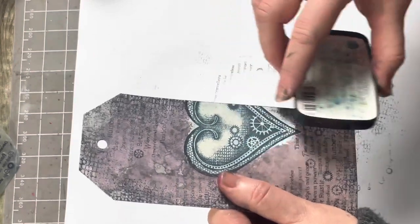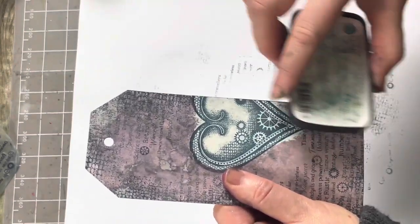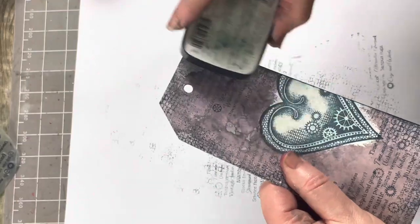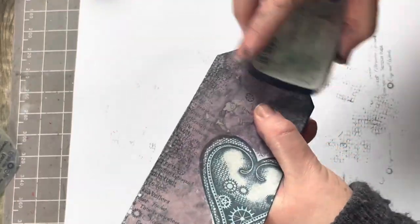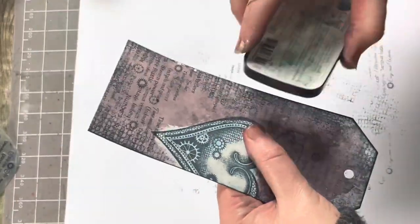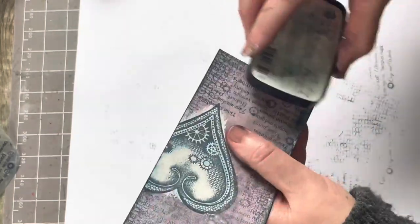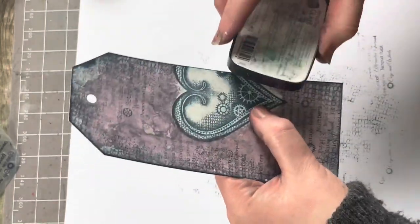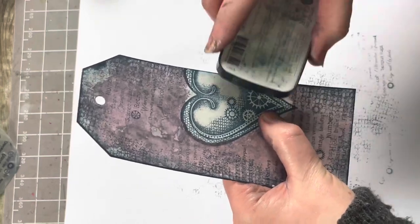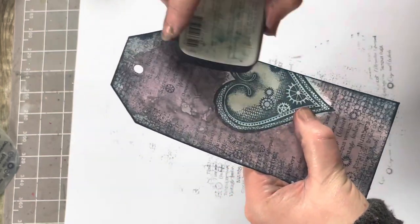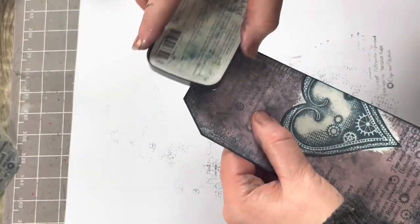To finish it off I'm going to go around the edge. You can use your ink pad like this or you could use your stencil brush, just to get that little bit of depth around the edge.